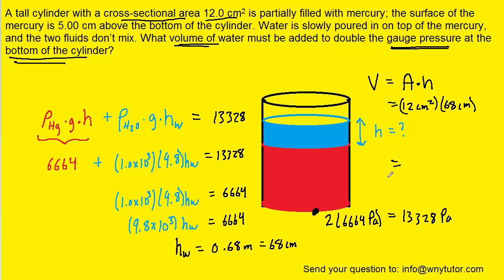When we multiply, we get 816. The unit is centimeters squared times centimeters, which equals centimeters cubed. This is the correct volume of water needed to double the gauge pressure at the bottom of the cylinder.